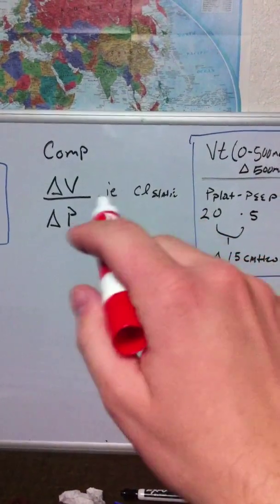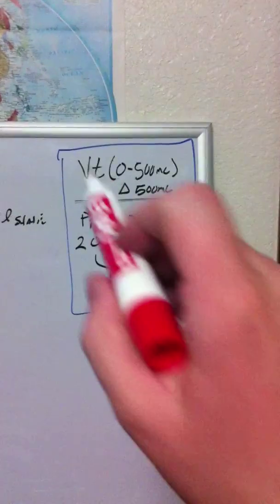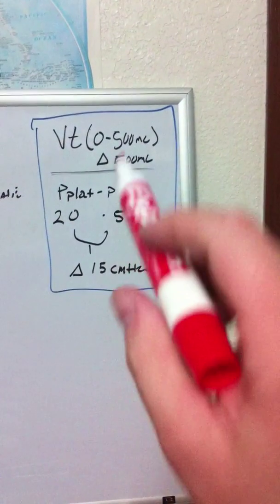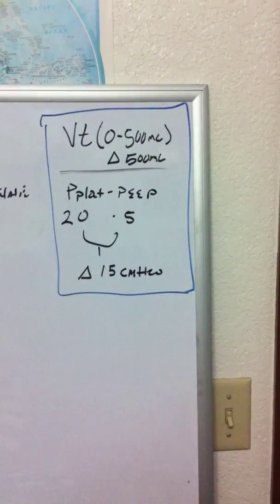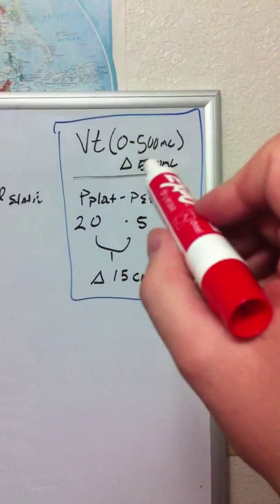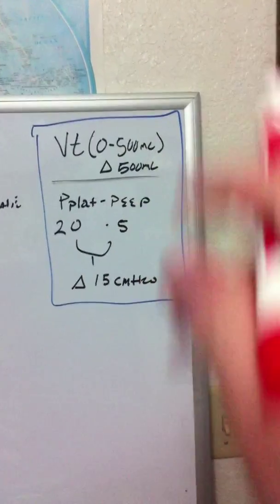In the special case of static compliance, my volume here, well if I go from 0 to 500 milliliters or 0 to 0.5 liters, all that is is just a change of 500 milliliters.